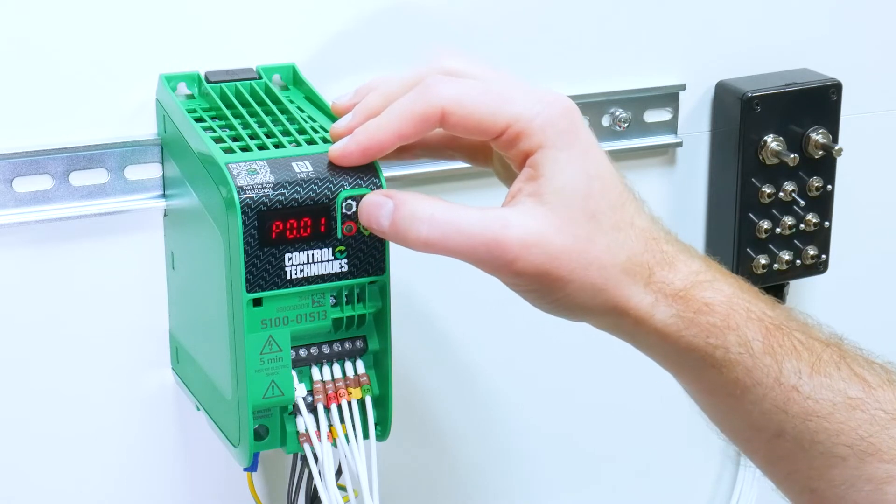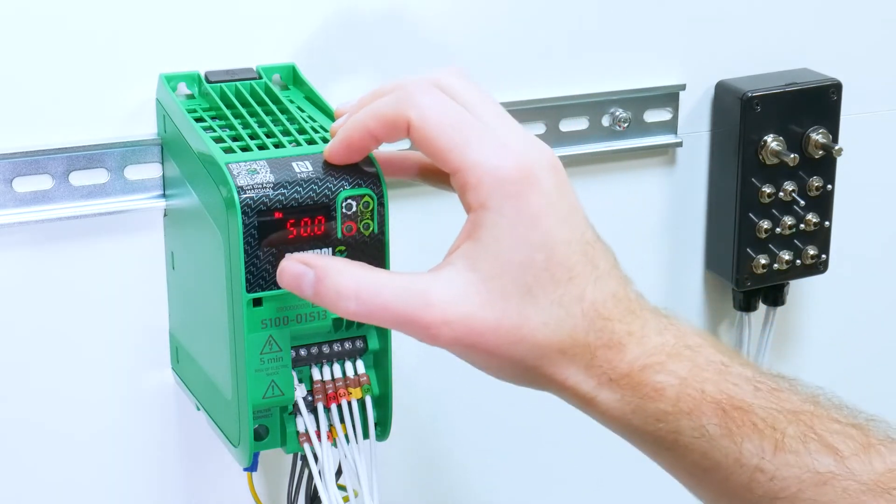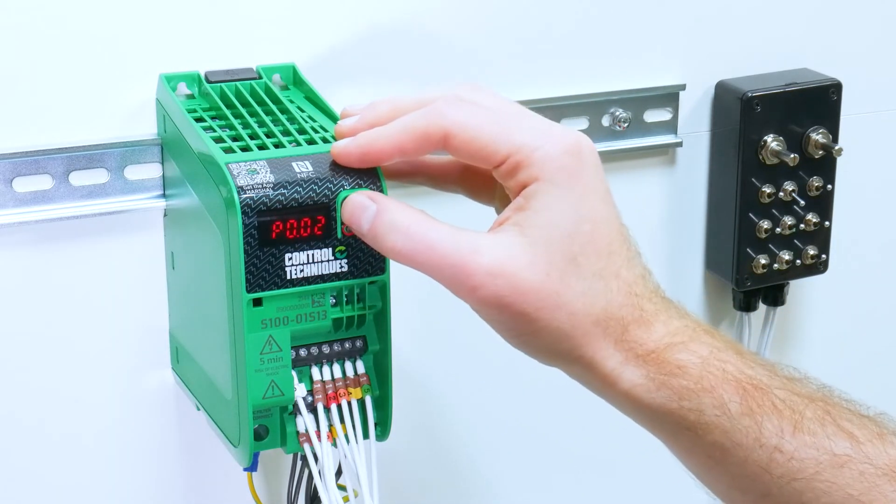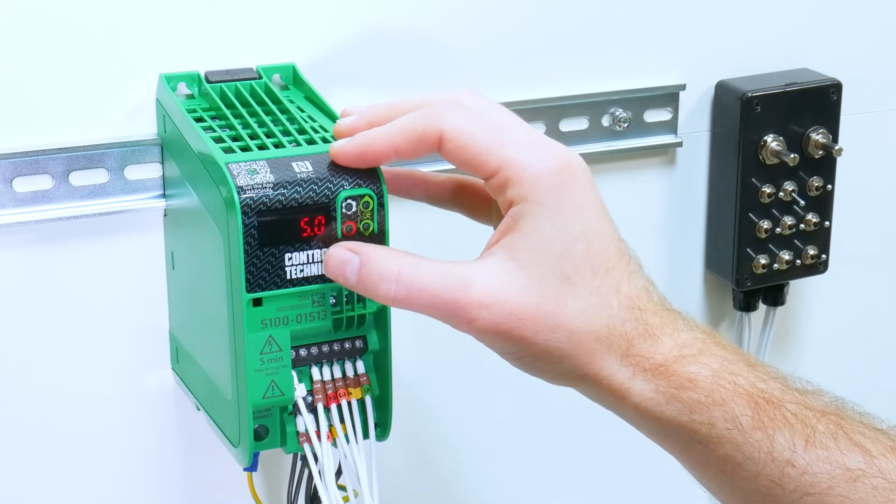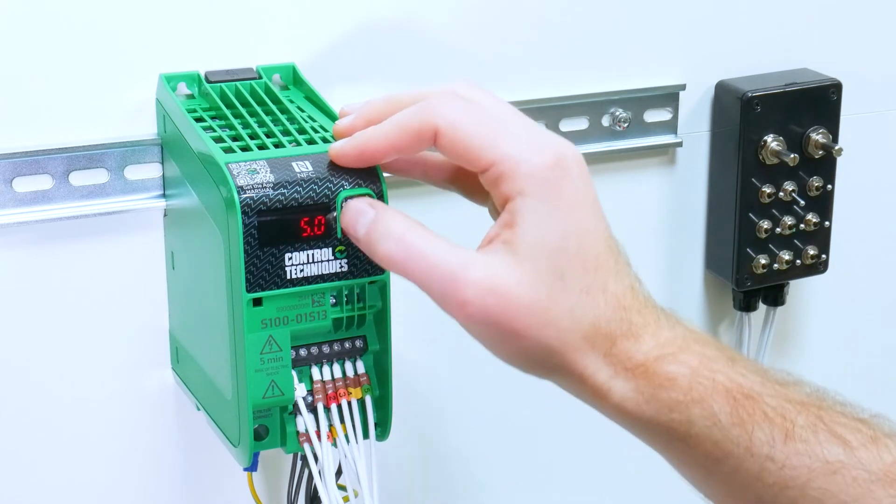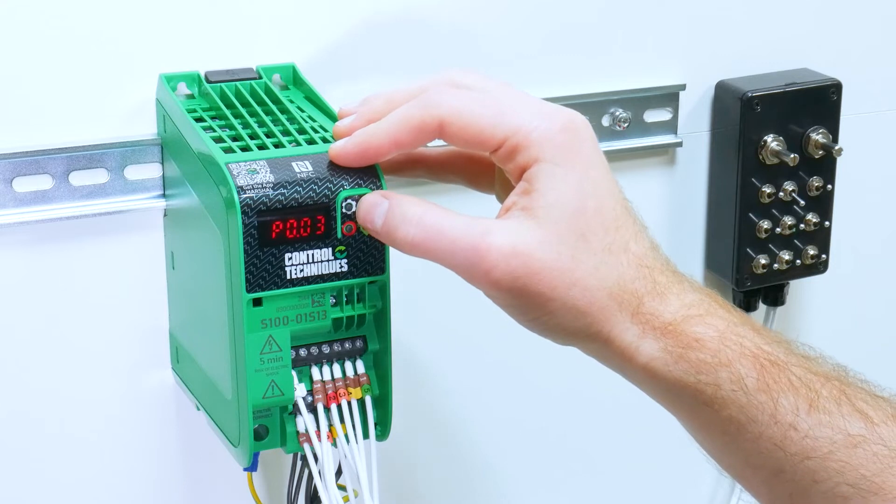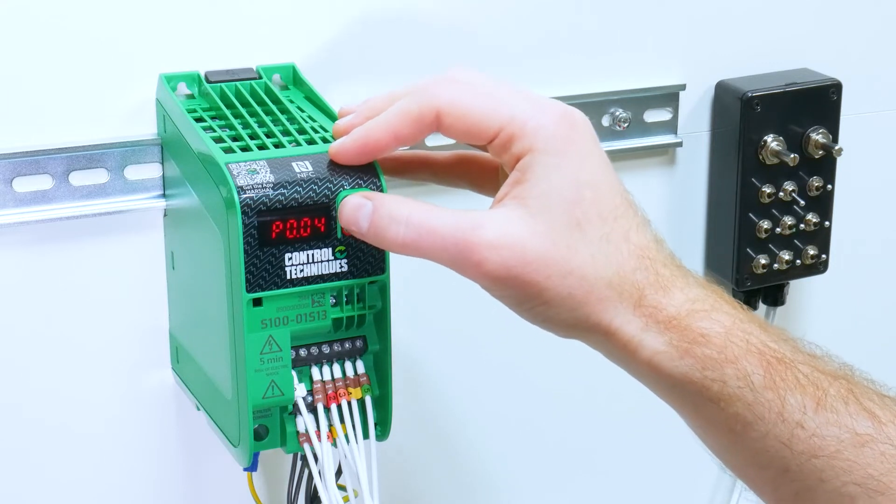Parameter 2 is our maximum frequency limit. Parameter 3 is our acceleration rate and parameter 4 is our deceleration rate. The default values are all fine for my application.